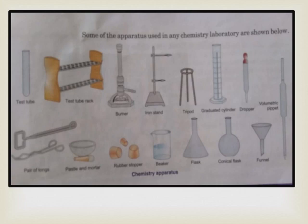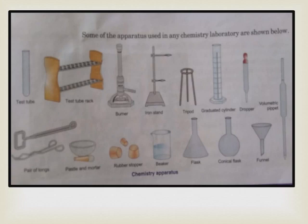An iron stand holds the apparatus we need. A tripod stand is used when heating something — the Bunsen burner is placed at the bottom and the object to be heated is placed on the ring on top. A graduated cylinder is marked with measurements: 10 ml, 20 ml, 50 ml, 100 ml, 200 ml, 300 ml. A dropper is used to pick up liquid chemicals without using our hands.